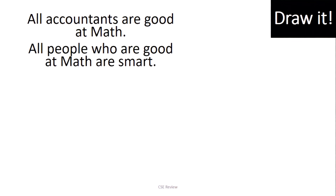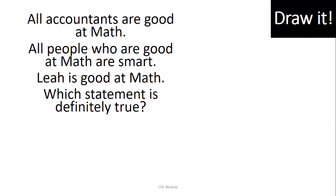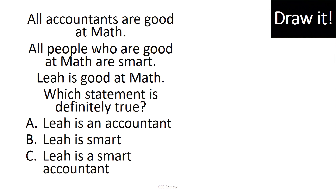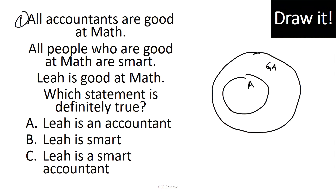Next: All accountants are good at math. All people who are good at math are smart. Leah is good at math. Which statement is definitely true? Options: A — Leah is an accountant; B — Leah is smart; C — Leah is a smart accountant. Let's draw it one line at a time. First: all accountants are good at math — so the accountants circle is inside the good-at-math circle.